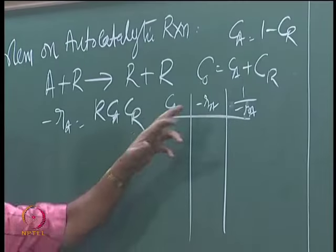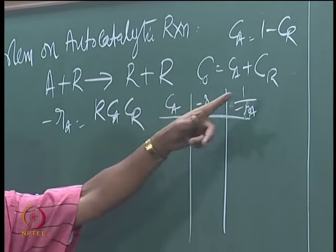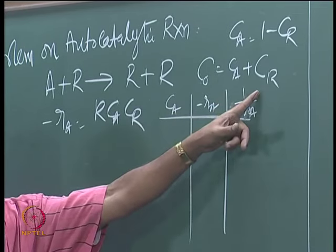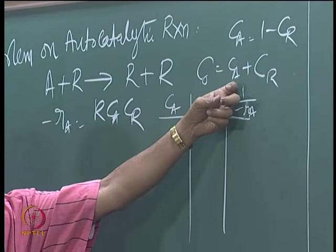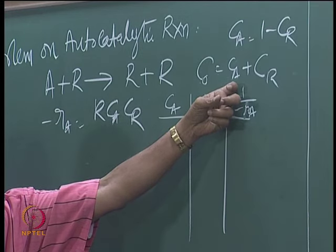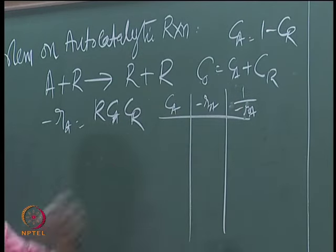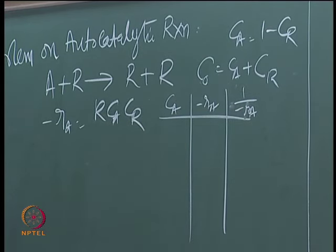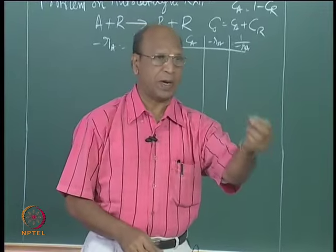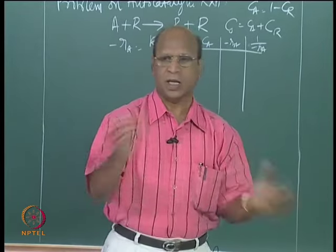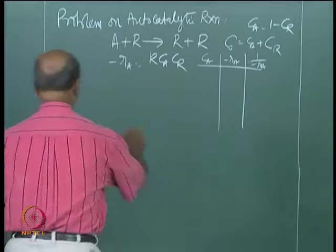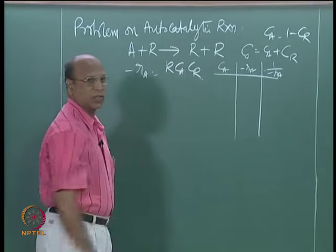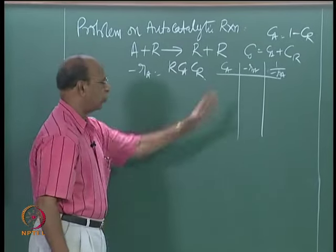You can calculate what C_A and C_R are. You can assume C_A values like 0.9, 0.8, 0.6, 0.7 and so on. Correspondingly, you can calculate the rate, and the rate is C_A times C_R. So you will get all the data.